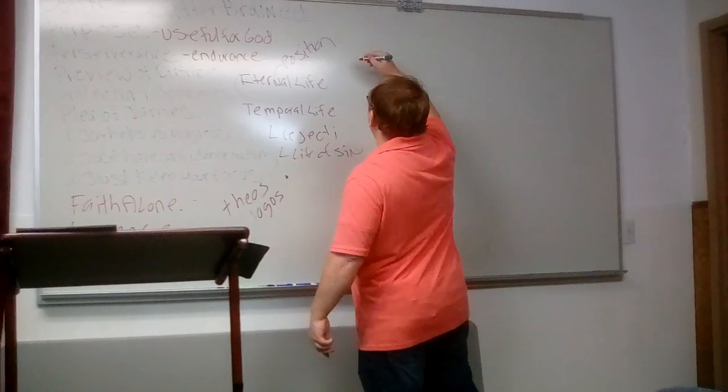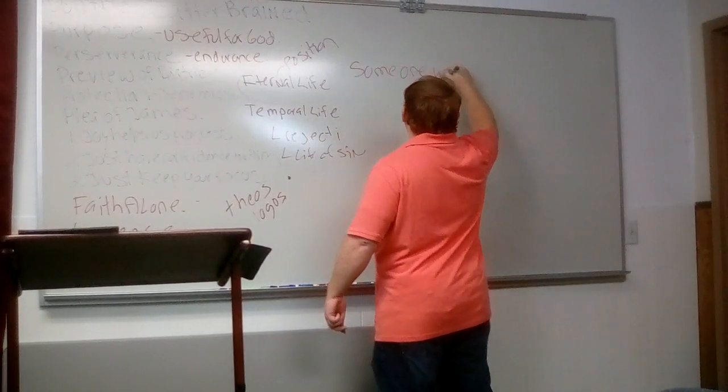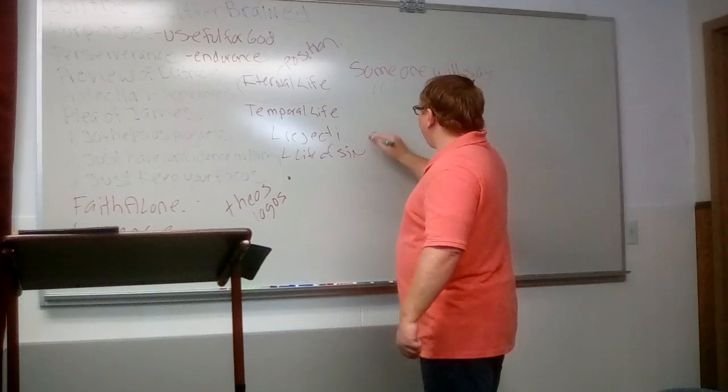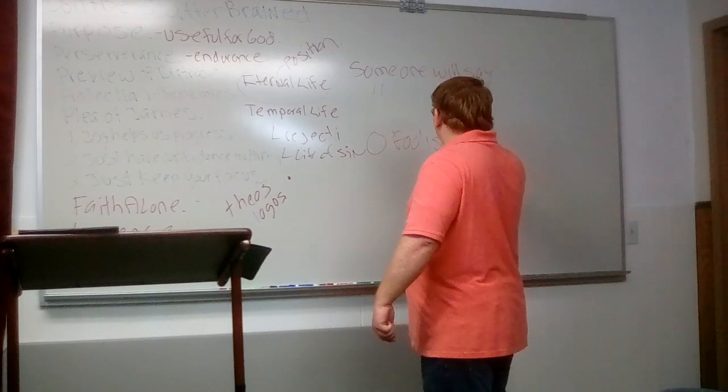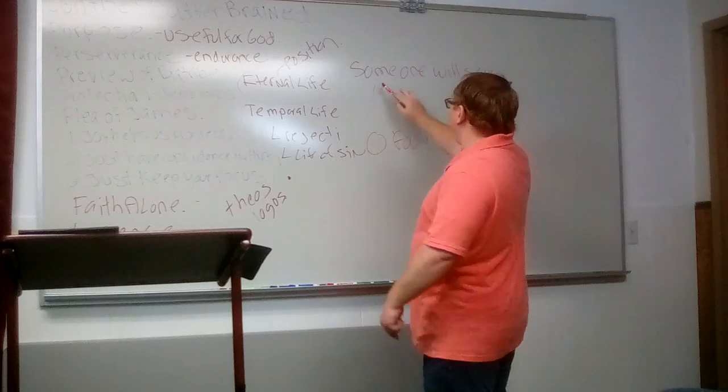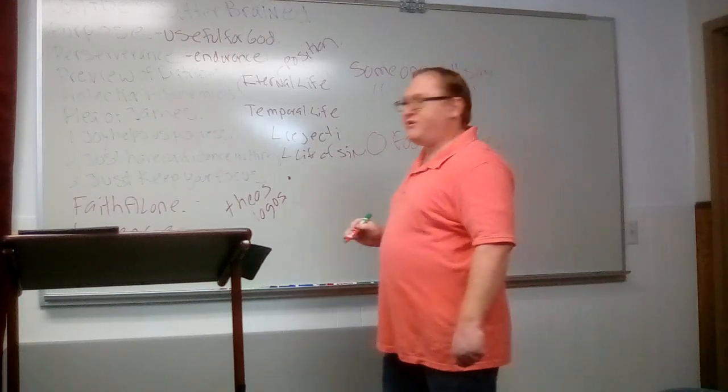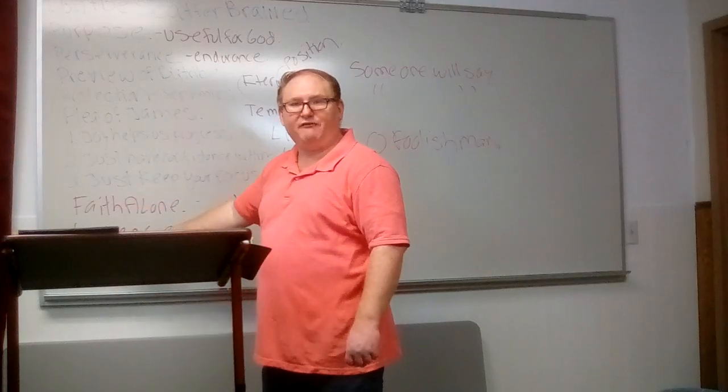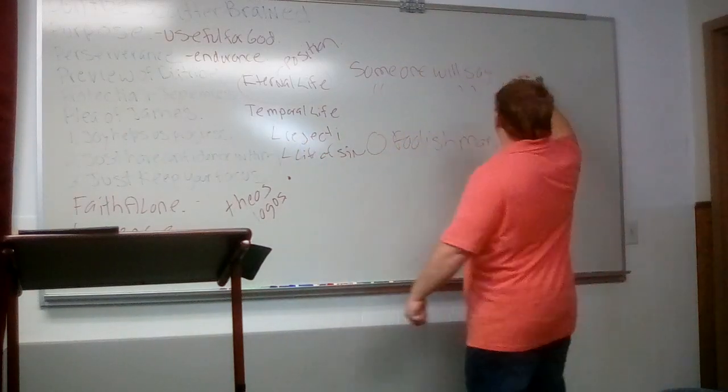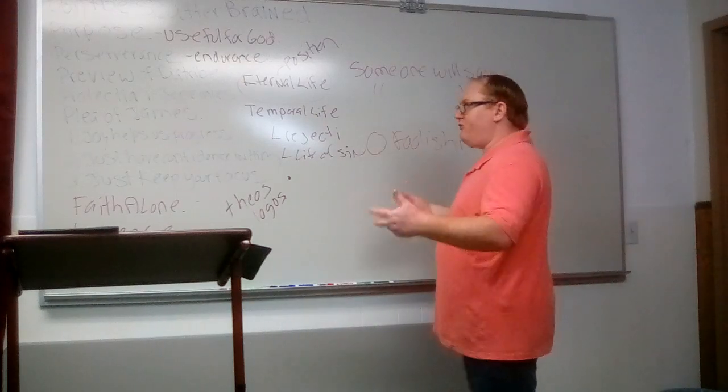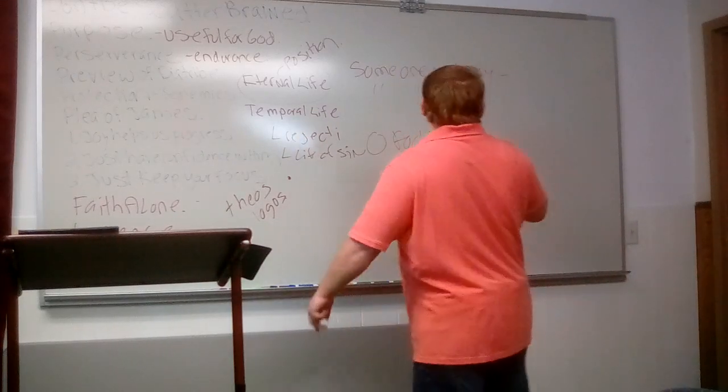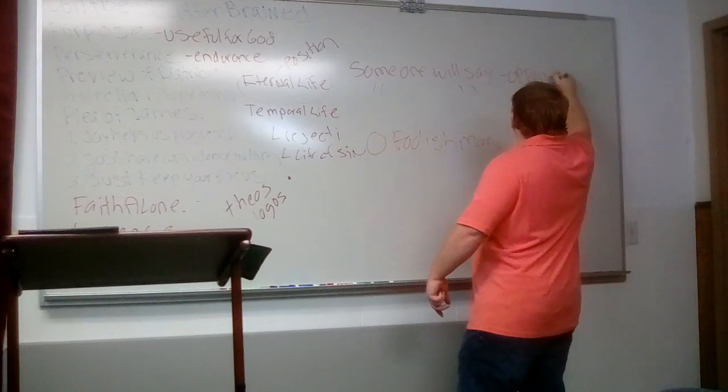Whether you die in a state of immaturity or in a state of rebellion, you're still saved. You're still eternally secure. Now, you might die faster than other people because God can put you to sleep. So, perseverance is good, but not for salvation. I want to use an example of diatribe right here. Go to James 2, verse 18. I just want you to look at this. I want you to see how verse 18 begins and how verse 20 begins.